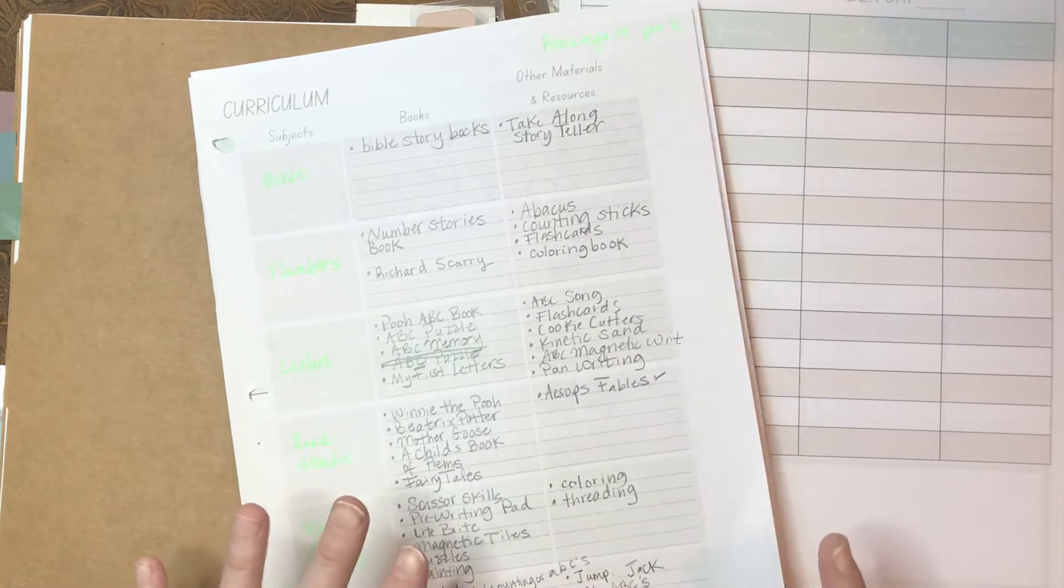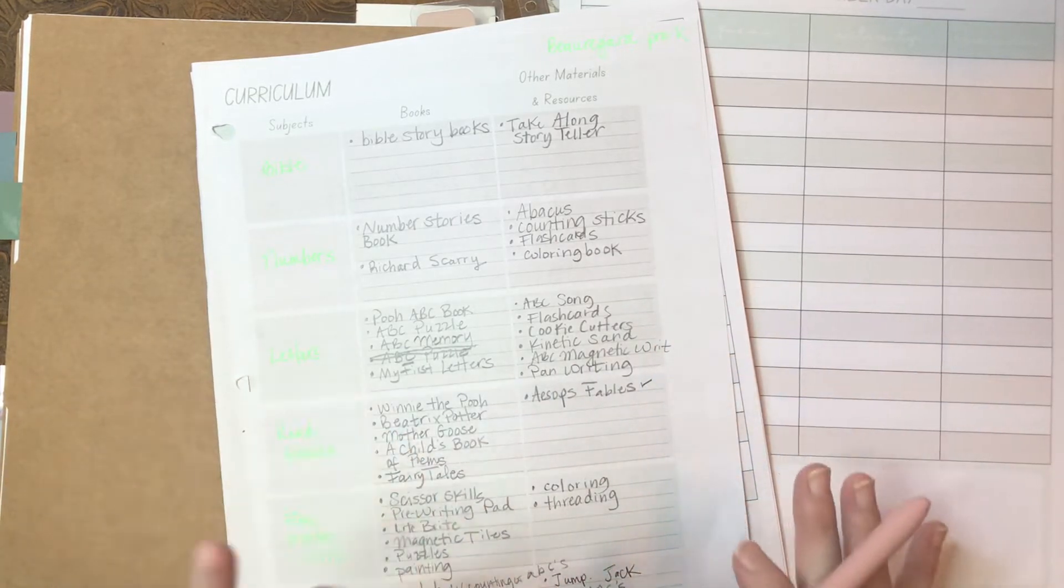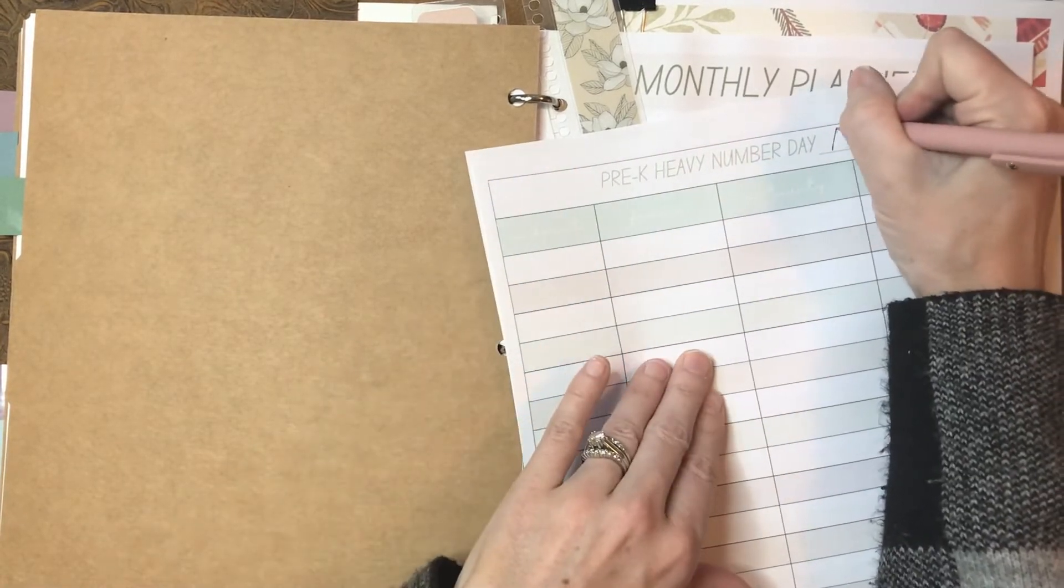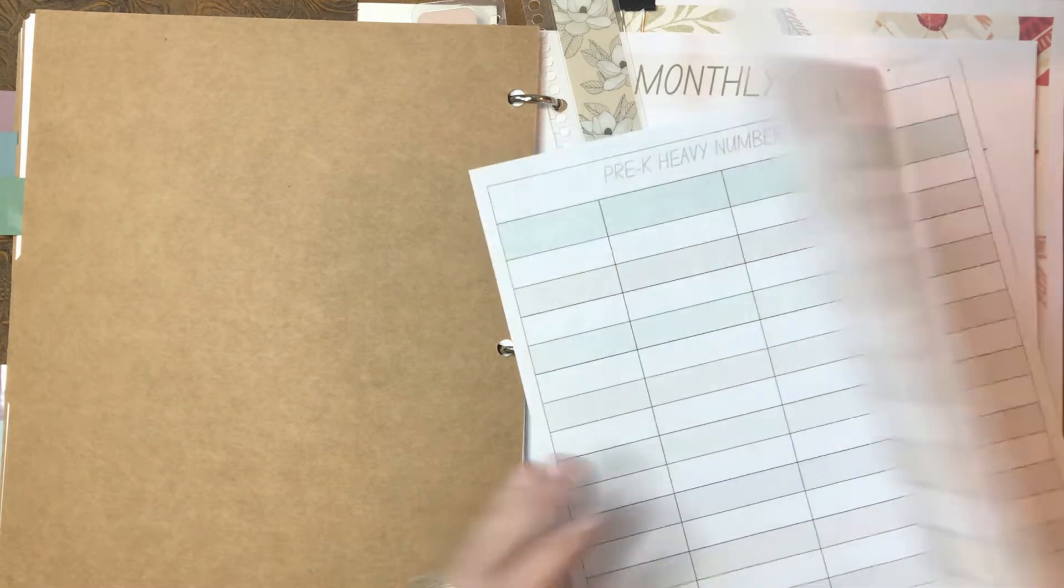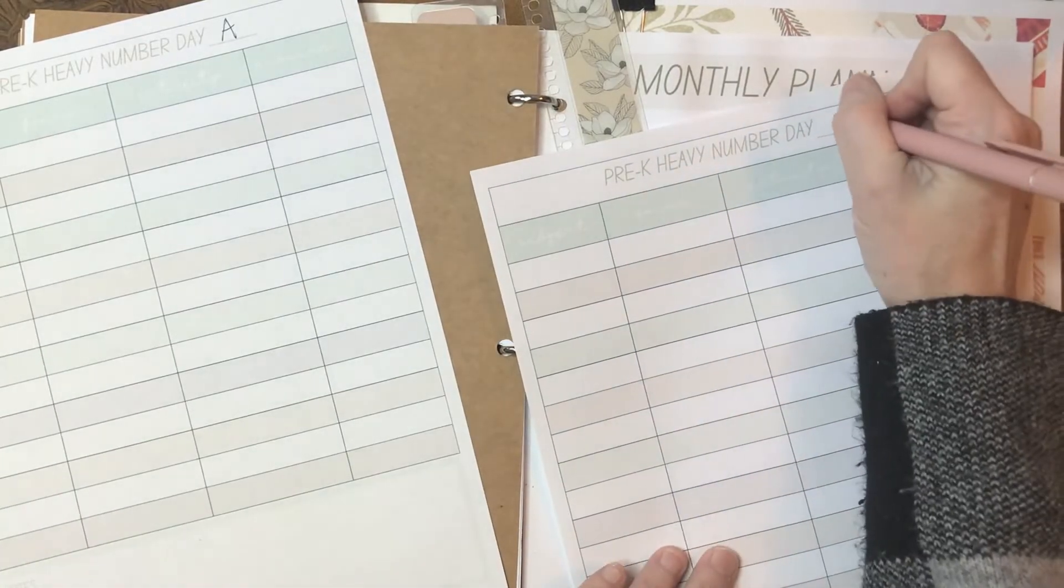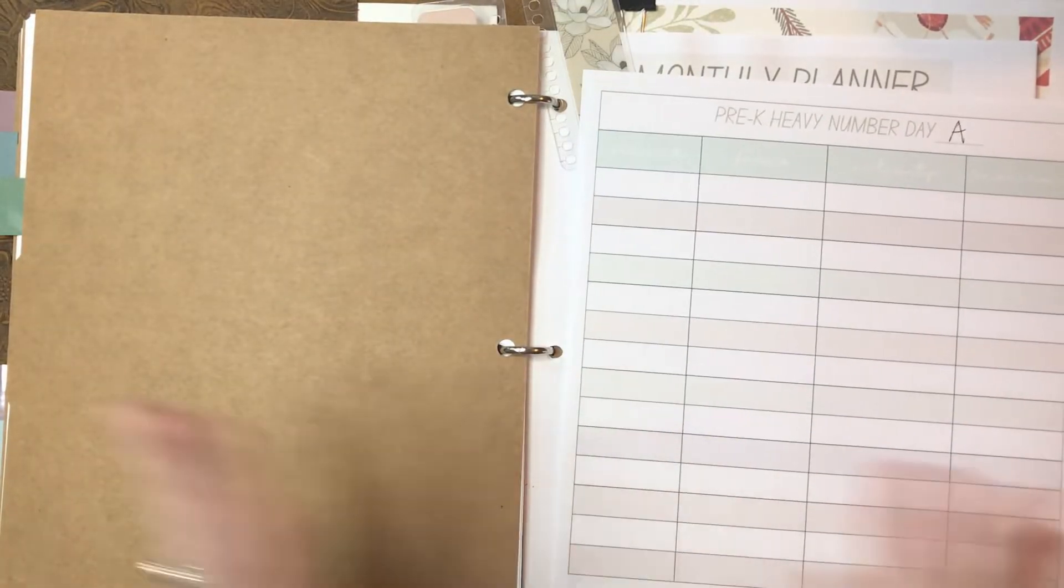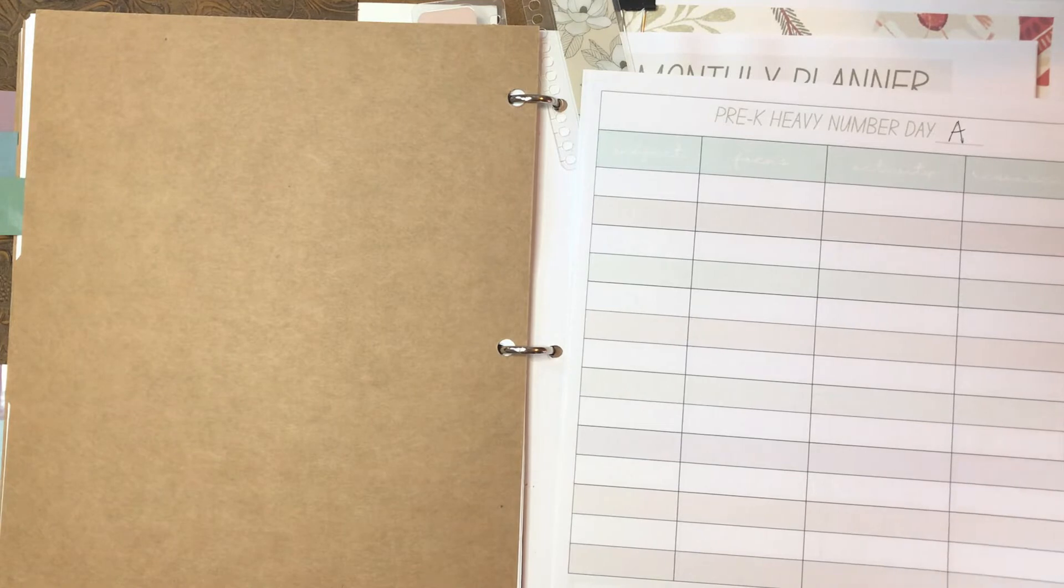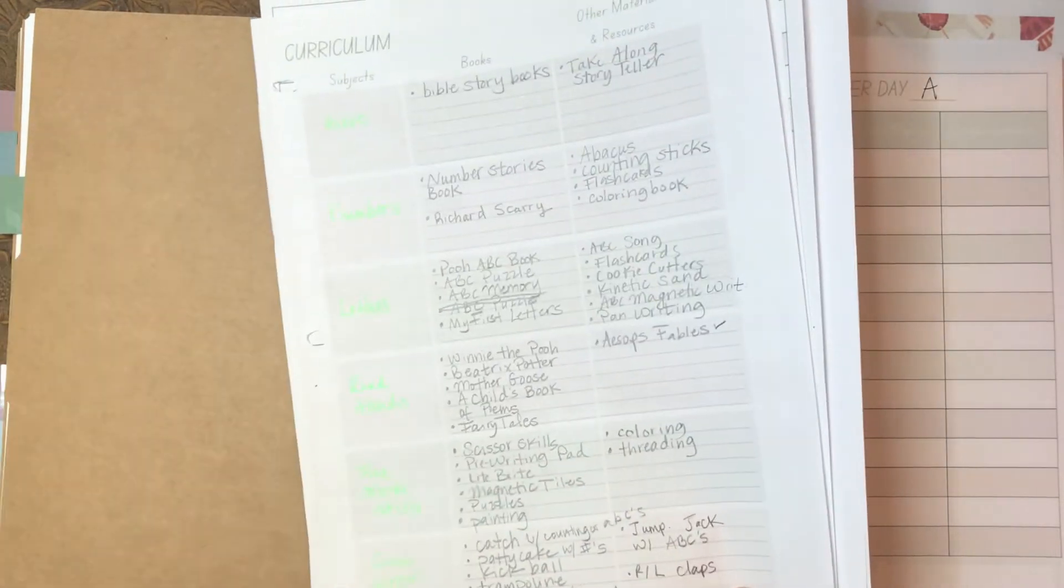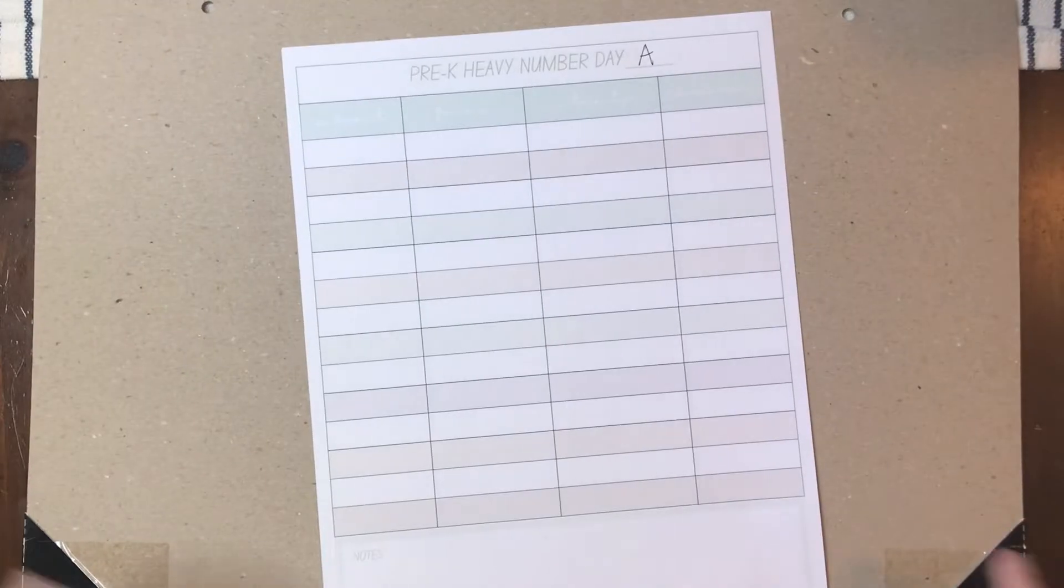So right now I'm into adjusting them weekly or monthly to find out where his level was. He's four, a young four. So Pre-K heavy number day is the first one A, heavy letter day B, and then C and then D. I'm just going to go through those daily: heavy number, heavy letter, heavy number, heavy letter. I'm still going to try to hit all of my subjects each day, but they're just not going to be as heavy.